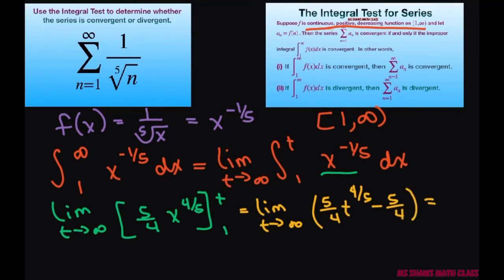Alright, so when you substitute in your infinity here, this is going to go off to infinity. This isn't going to matter. So it equals infinity. Therefore, since that's the case, our series n equals 1 to infinity of 1 divided by 5th root of n diverges.